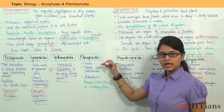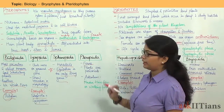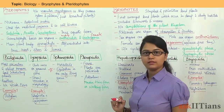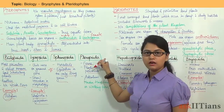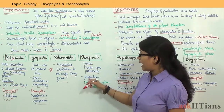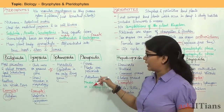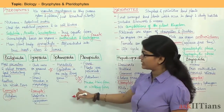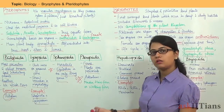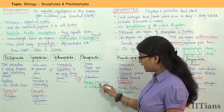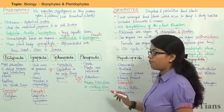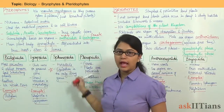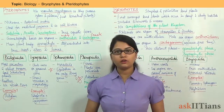Next comes Pteropsida. Under Pteropsida, ferns are present, and the plants are perennials. Adiantum is an example under Pteropsida, which is also known as the maidenhair fern or walking fern. So we have discussed Pteridophytes and the classification under Pteridophytes.